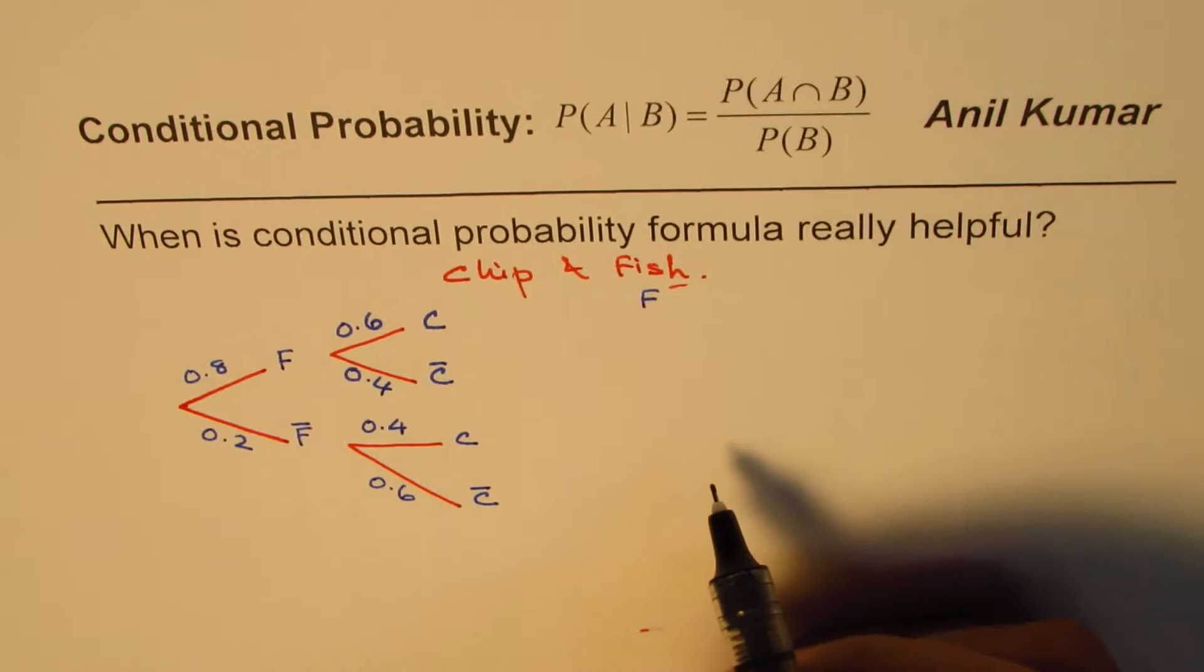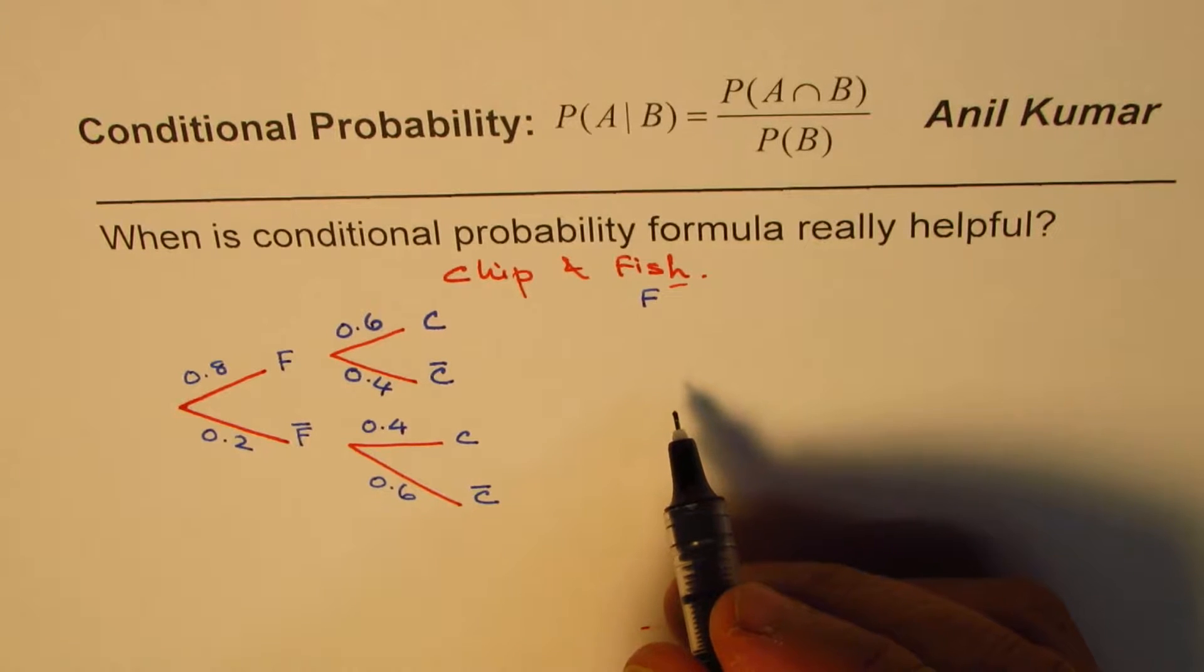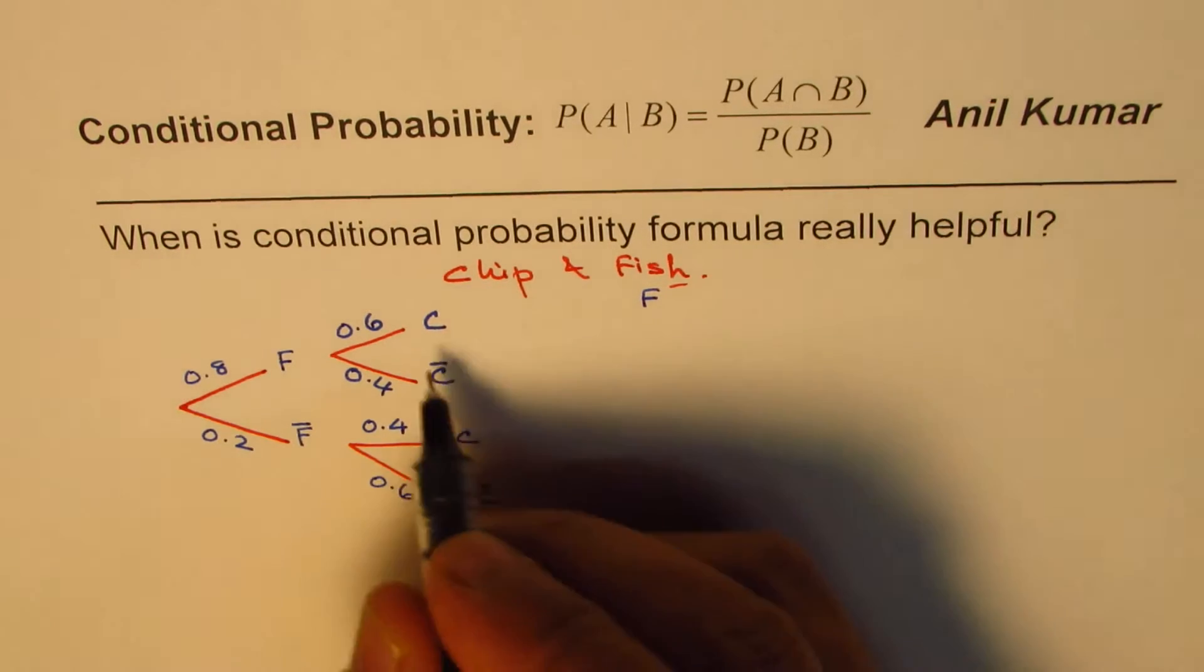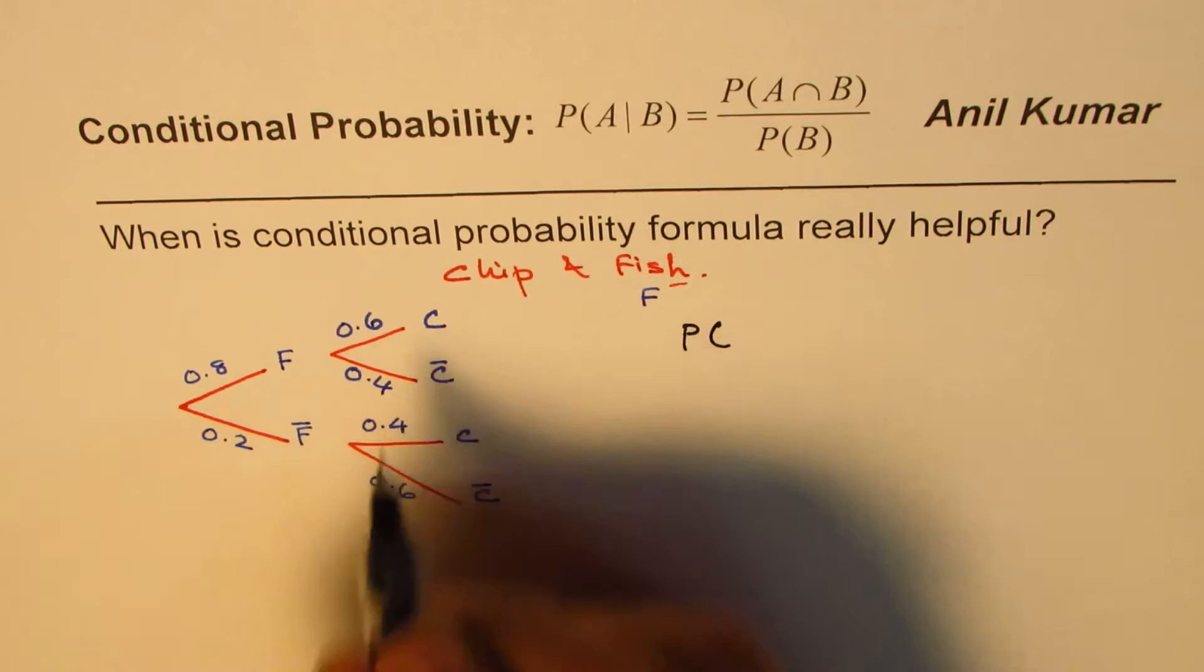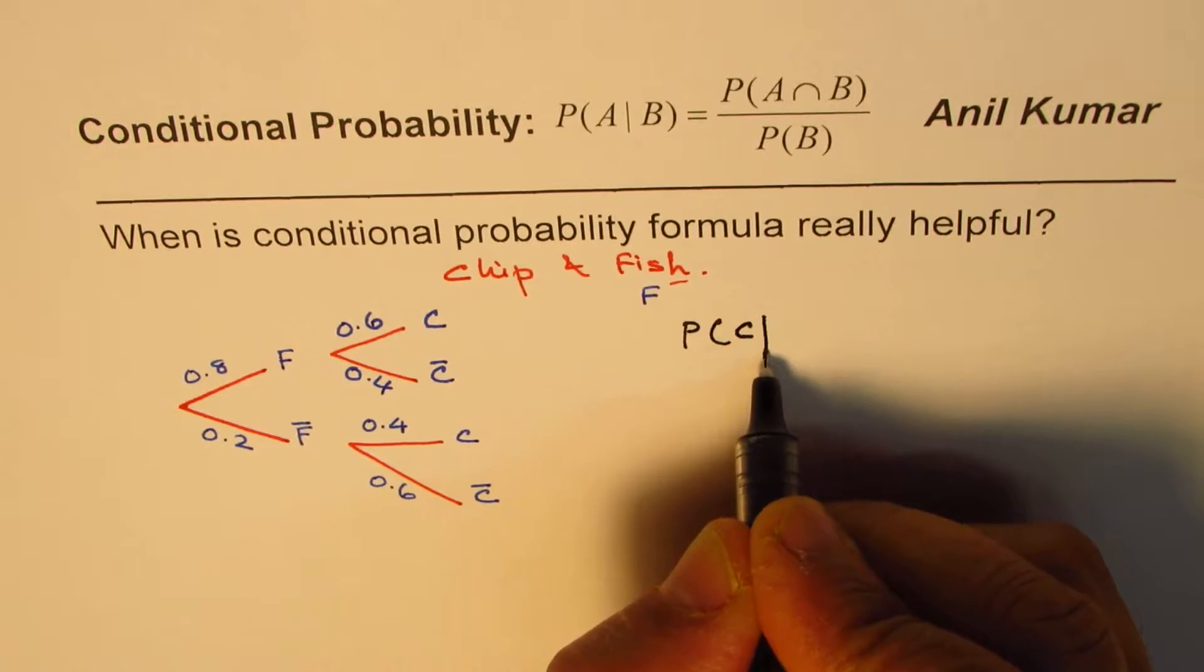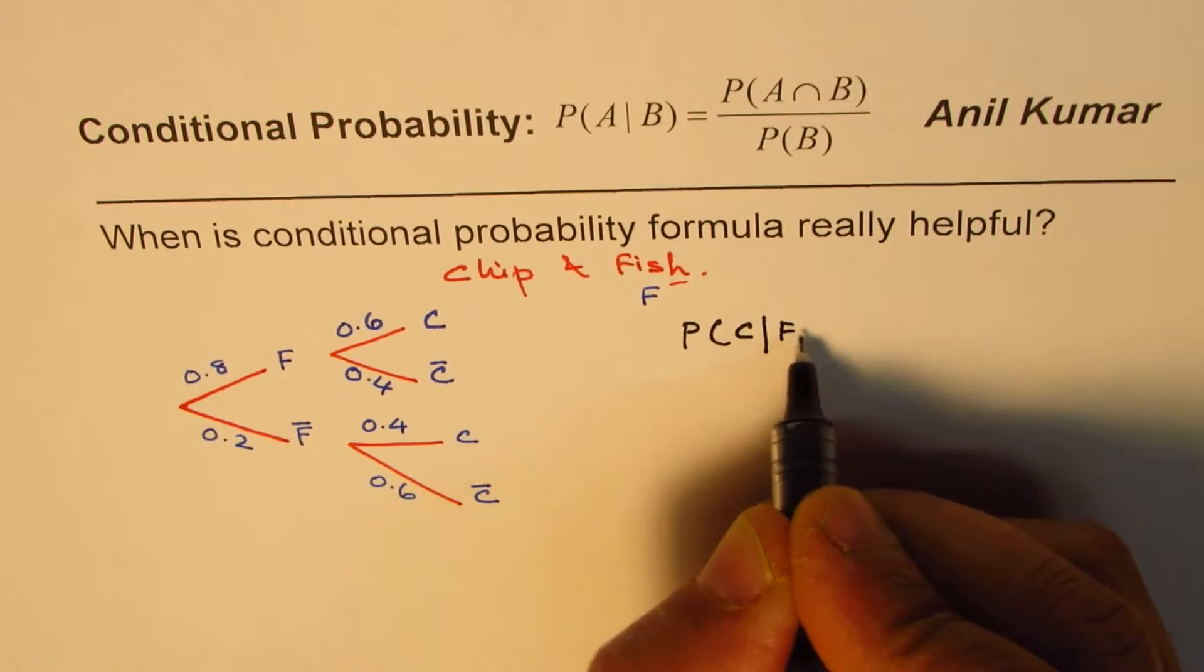Clearly, in this tree diagram, we see that chips are dependent on fish order. So let us take part A, which is what is the probability of a customer ordering for chips when it is known that fish has been ordered?